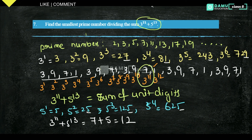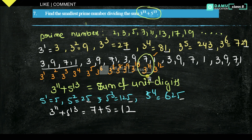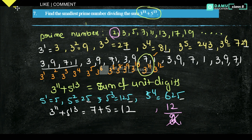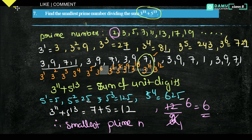The unit digit is 2 (from 12), so the number is easily divisible by 2. Since 12 is divisible by 2, the smallest prime number dividing 3^11 + 5^13 is 2. Using unit digits, we can check divisibility like this.